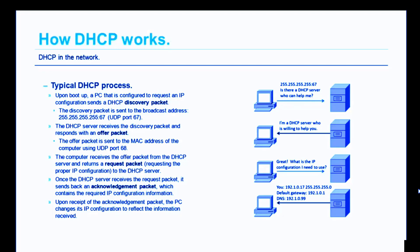The offer packet is sent back to the MAC address of the computer requesting help on port 68. Once the computer receives the offer packet from the DHCP server, if it's going to use that DHCP server, it returns a request packet — requesting the proper IP configuration from that specific DHCP server. Once the DHCP server receives the request packet, it sends back an acknowledgement packet containing all of the required IP configuration information. Once the PC receives the acknowledgement packet, the PC changes its IP configuration to reflect the information received. That's the typical DHCP process in a nutshell.